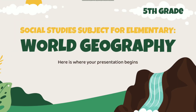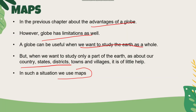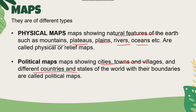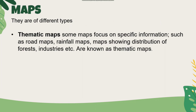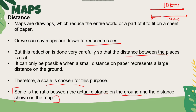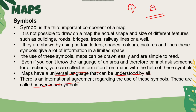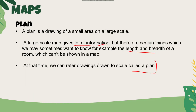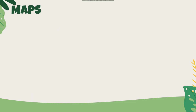In summary, there is a comparison between the map and the globe, and between the different types of maps — physical, political, and thematic. The definition of a map, the three components — distance, direction, and symbol — and the sketch or plan have all been covered. If you have notes, you will be able to answer the exam. Thank you.